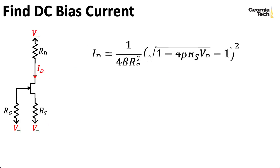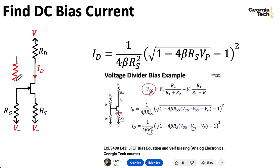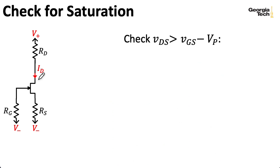We computed the DC bias current for the drain, which is the same as the current for the source, in one of our previous lectures. And you can also check out that lecture to see what you do for a fixed resistor bias scheme, where we have a resistor going to the positive rail here.